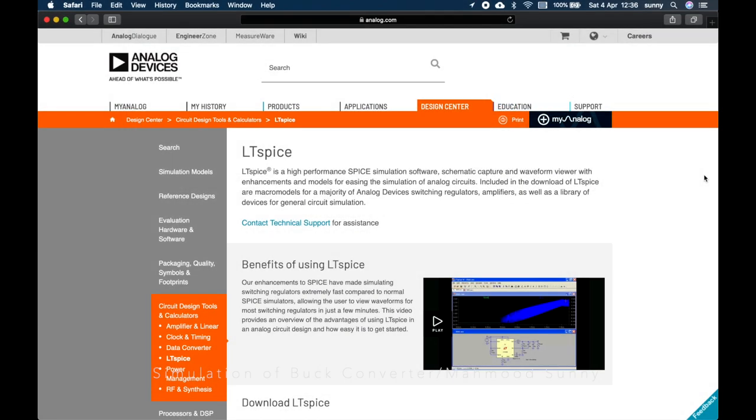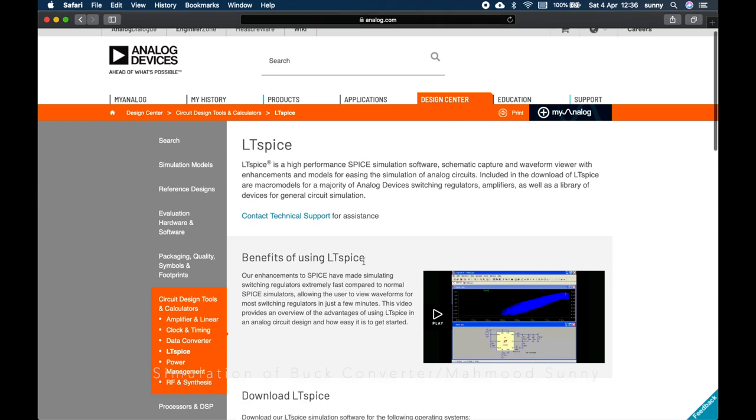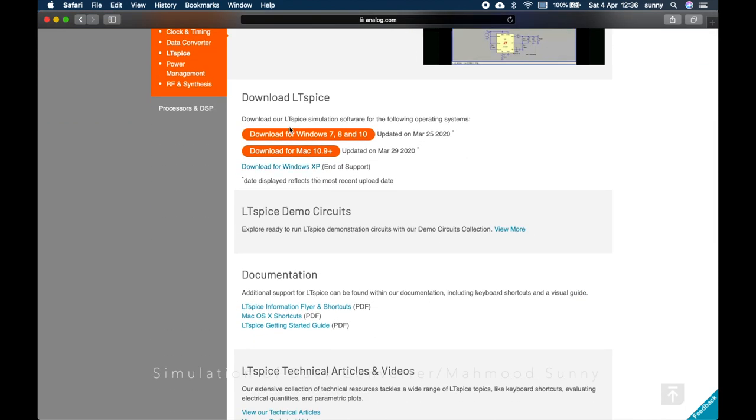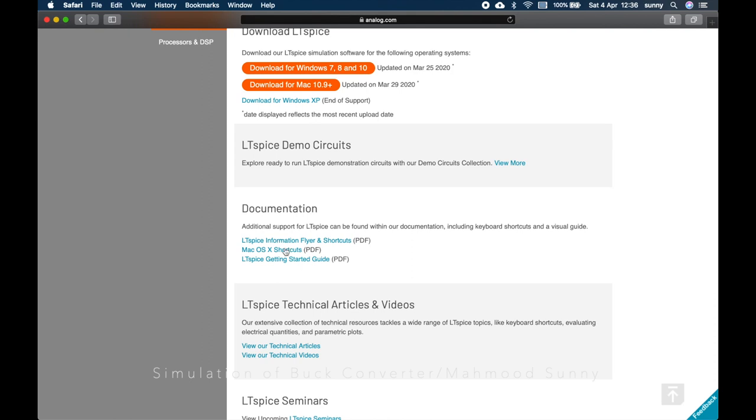We will design and simulate our buck converter using this freely available LTSPICE software. To download this software, go to analog.com, then go to design center and you can download it from these two links. For Windows, use this link or if you are using Mac, then you can download it from here. You can also get some flyers and information from this page.